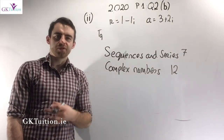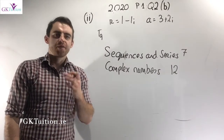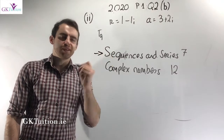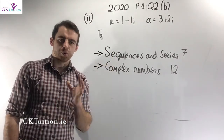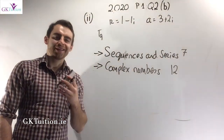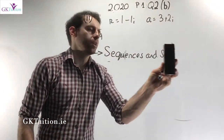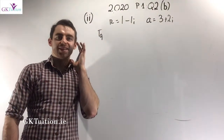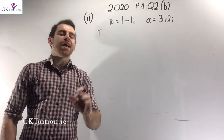Part B(ii) is very involved and requires a good understanding of both topics. The theory comes from sequences and series 7 and complex numbers 12. We are asked to find the 9th term in this geometric series using De Moivre's theorem.